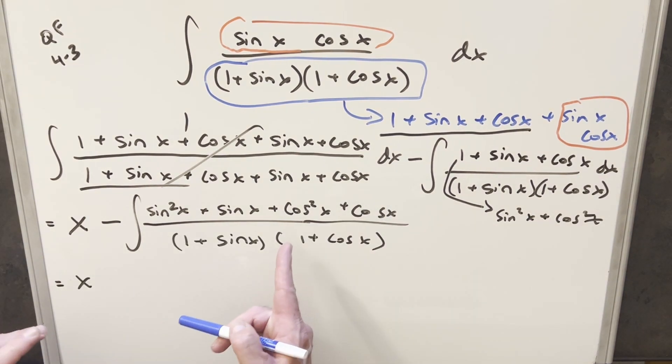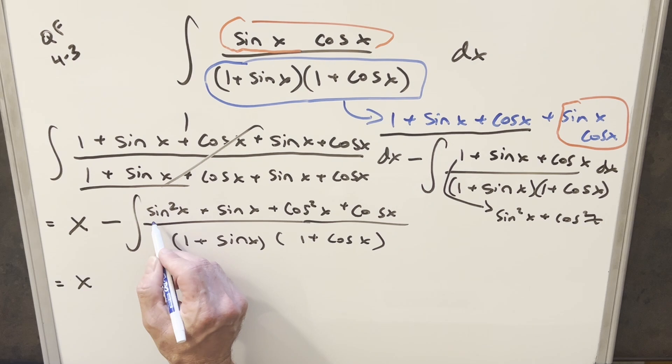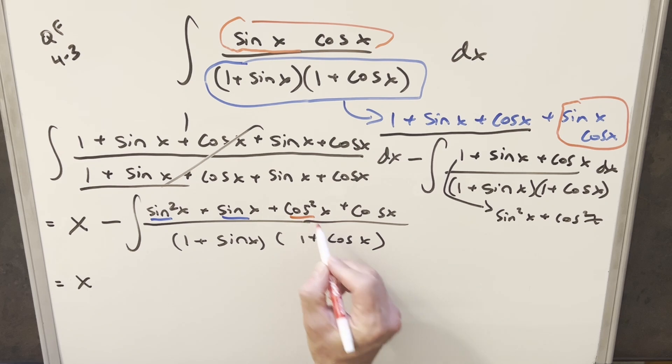But then what I can do is just factor in the numerator and rewrite the integral. So like here, I can factor out a sine x, because we've got that in common. And over here, I can factor out a cosine x, because we have that in common. And then I can break it into two integrals.